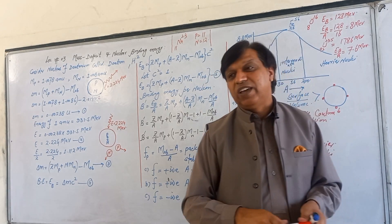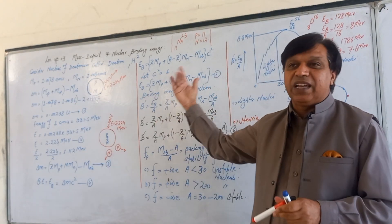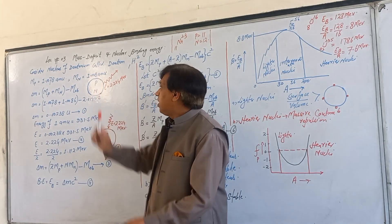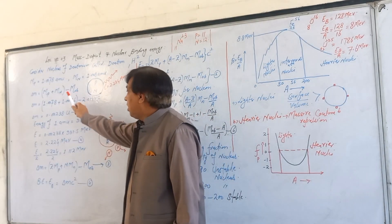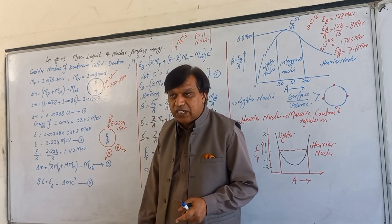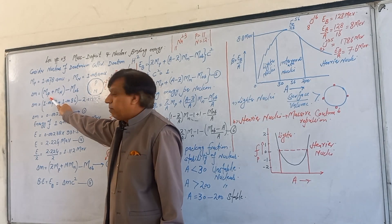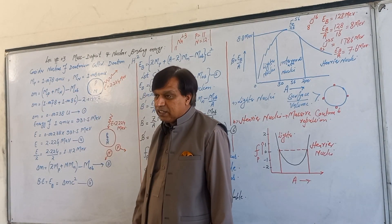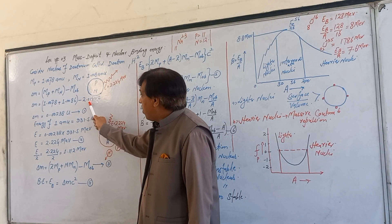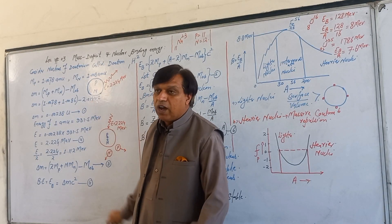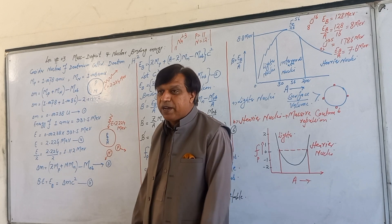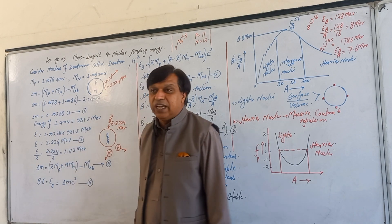Now we calculate the actual experimental value. Mass defect delta m equals mass of proton plus mass of neutron minus observed mass of deuterium. So delta m = 1.0078 + 1.0086 − 2.014102 = 0.00238 amu. This difference in mass is what we call mass defect.